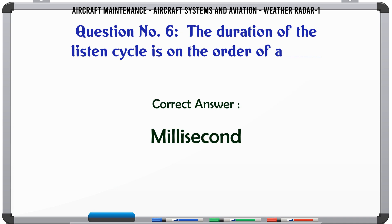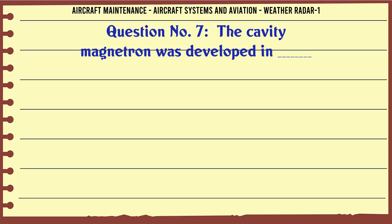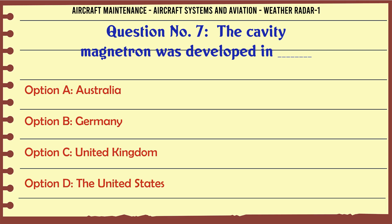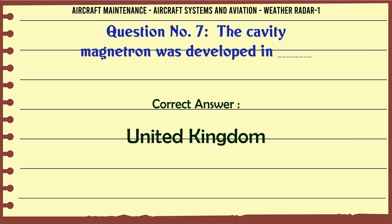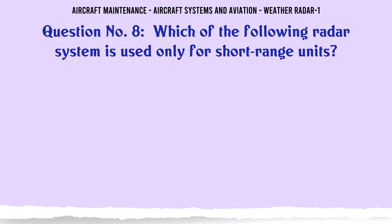The cavity magnetron was developed in: A: Australia. B: Germany. C: United Kingdom. D: The United States. The correct answer is United Kingdom.